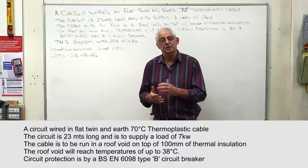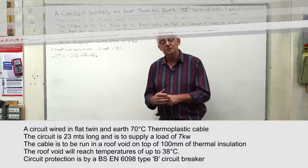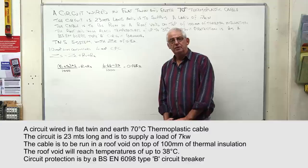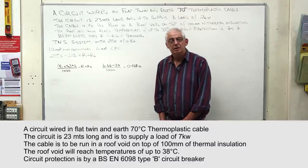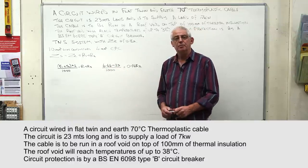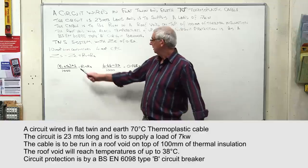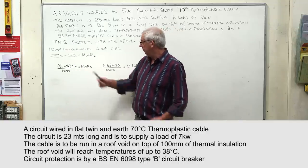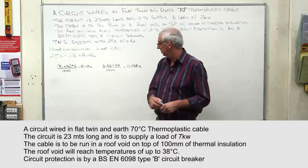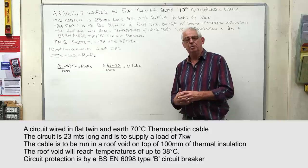Table L1 of the On-Site Guide gives resistance values for cable combinations. For a 10mm² line conductor with a 4mm² CPC, the resistance is 6.44 milliohms per meter. Multiplying that by the cable length of 23 meters and dividing by 1000 gives R1 + R2 for the full cable length — referred to as big R1 + R2 — which calculates to 0.148 ohms.